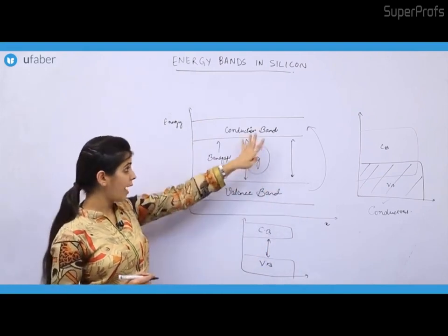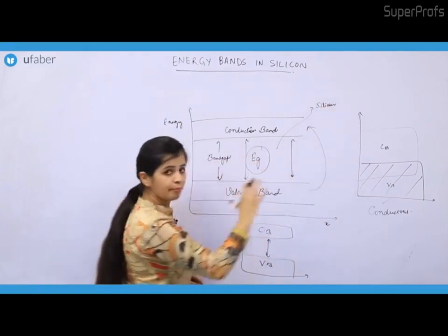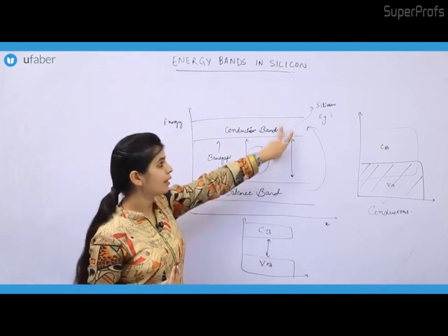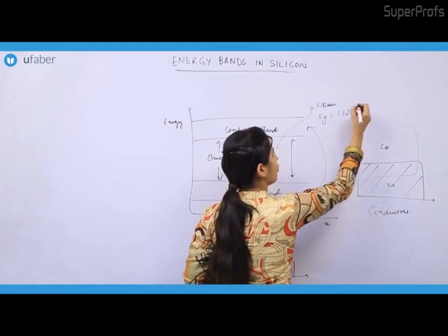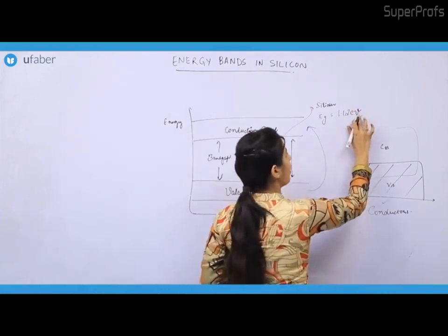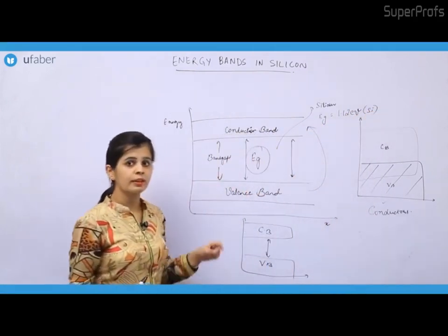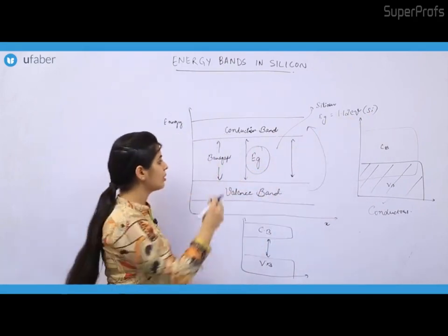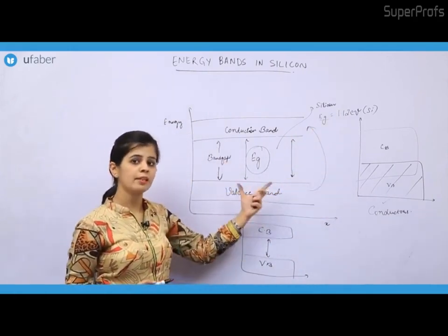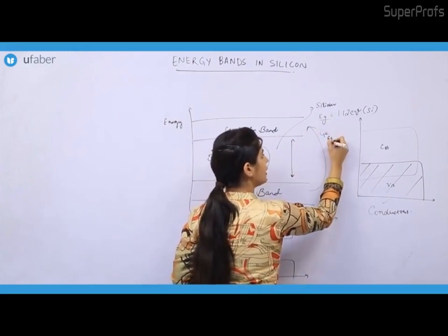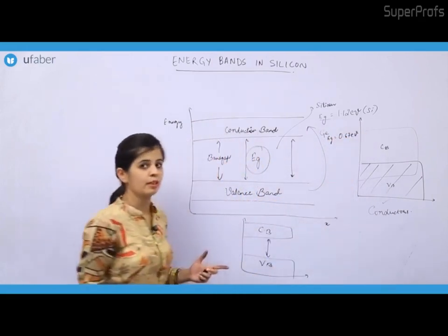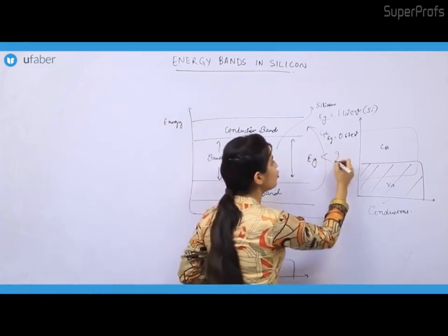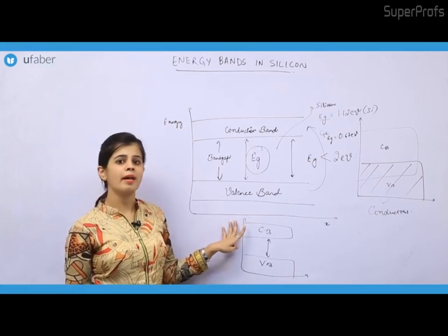Now, in case of silicon, this band gap has a specific value — the energy required by an electron to move from the valence band to the conduction band. This is the amount of energy required by the silicon electron in the outermost band to move from valence band to conduction band. Similarly, for germanium, the value of EG is 0.67 electron volts. You have to keep these two values in mind. Generally, in case of semiconductors, the value of EG is smaller than 2 electron volts.